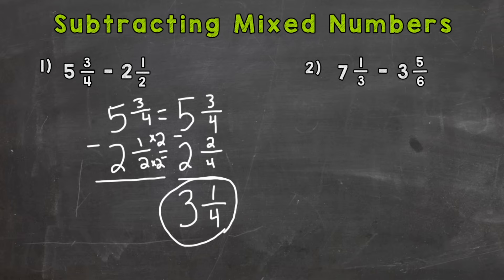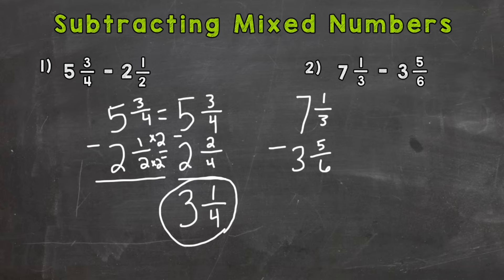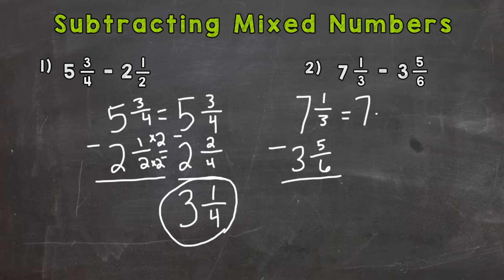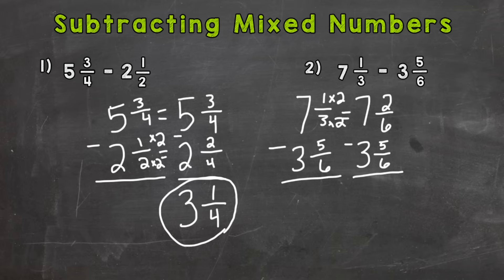Let's take a look at number 2. Rewrite the problem vertically: 7 and 1/3 minus 3 and 5/6. Let's do the fractional part first. We do not have a common denominator, so we will need to rename with a common denominator. For 3 and 6, the common denominator is 6. So 7 and how many 6ths? Well, 3 times 2 is 6, and 1 times 2 is 2. Minus 3 and 5/6 — which already has a denominator of 6. There is our rewritten problem.